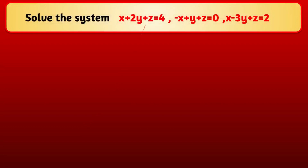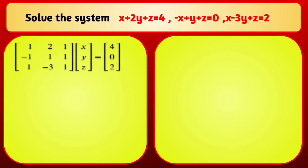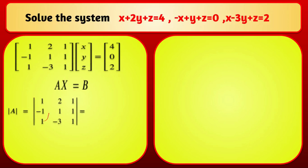Example 2 (3×3): Solve x + 2y + z = 4, −x + y + z = 0, x − 3y + z = 2. Written as AX = B, the coefficient matrix A is [[1,2,1],[−1,1,1],[1,−3,1]], variable matrix X is [x, y, z], and constant column matrix B is [4, 0, 2]. Find the determinant of A.